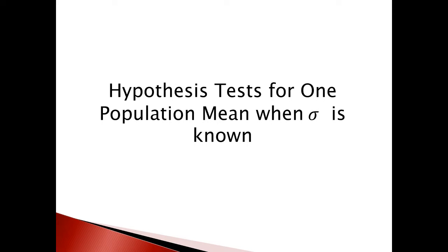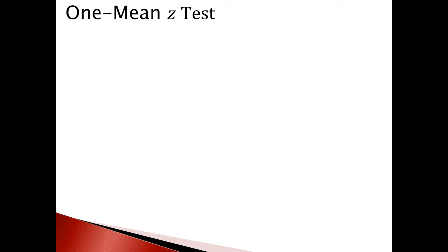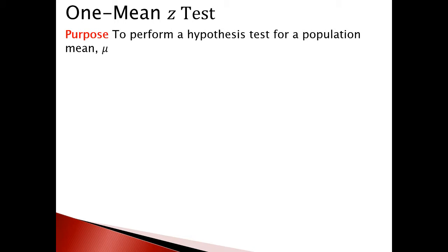Today I am discussing hypothesis testing for one population mean when sigma is known. Sigma is the standard deviation. We can call this hypothesis testing the one mean Z-test, or simply the Z-test. To perform the Z-test, we need some assumptions.